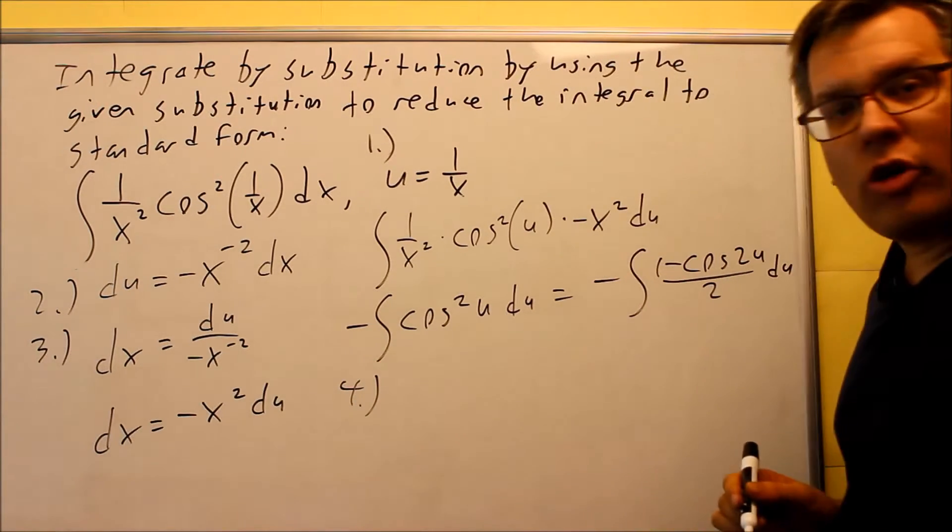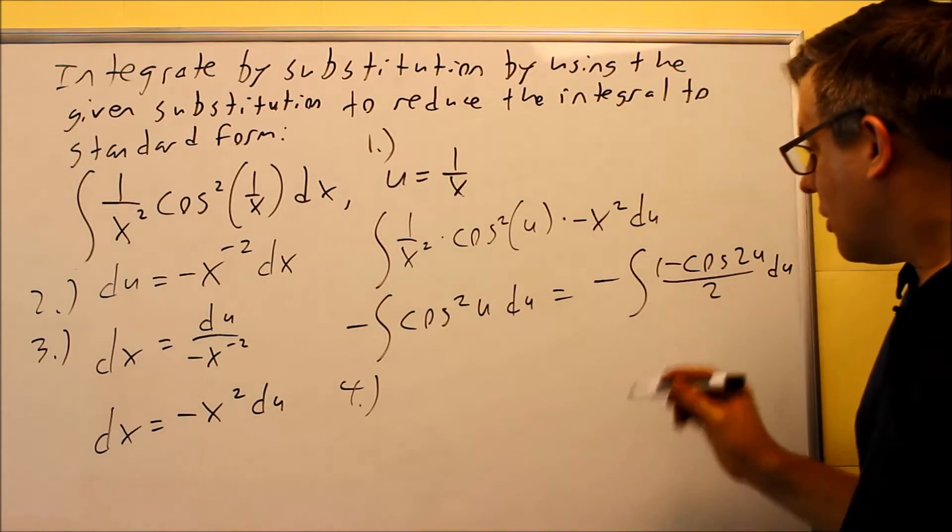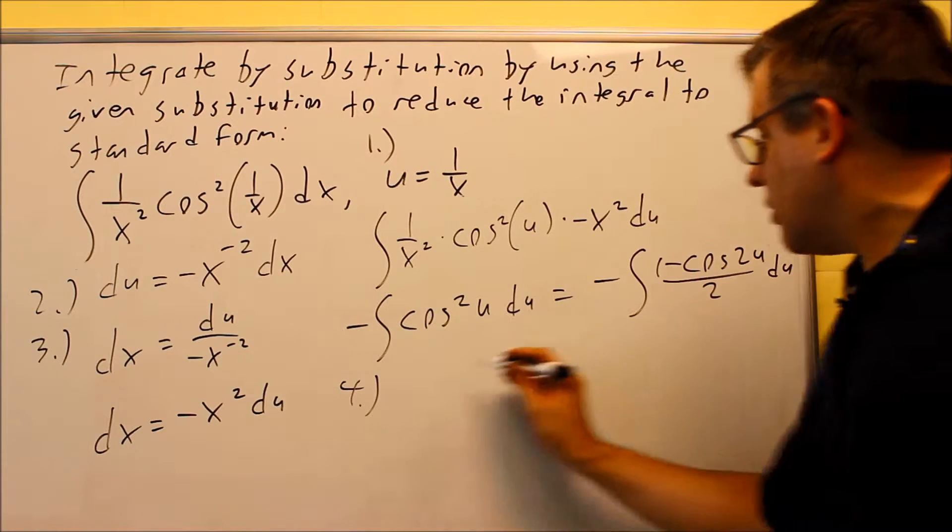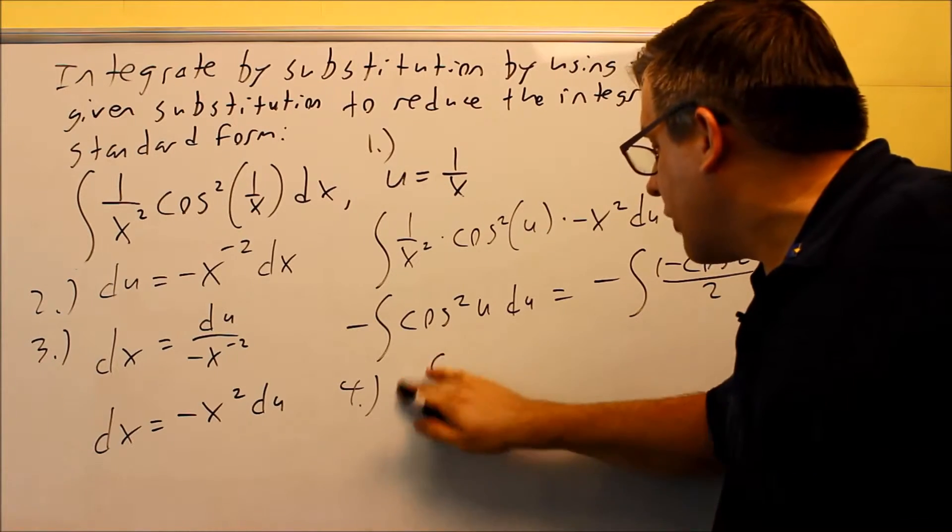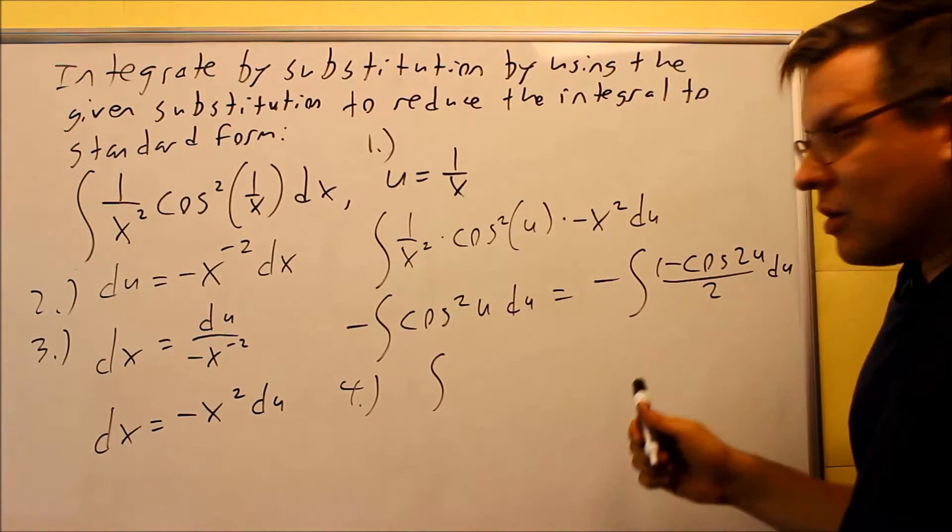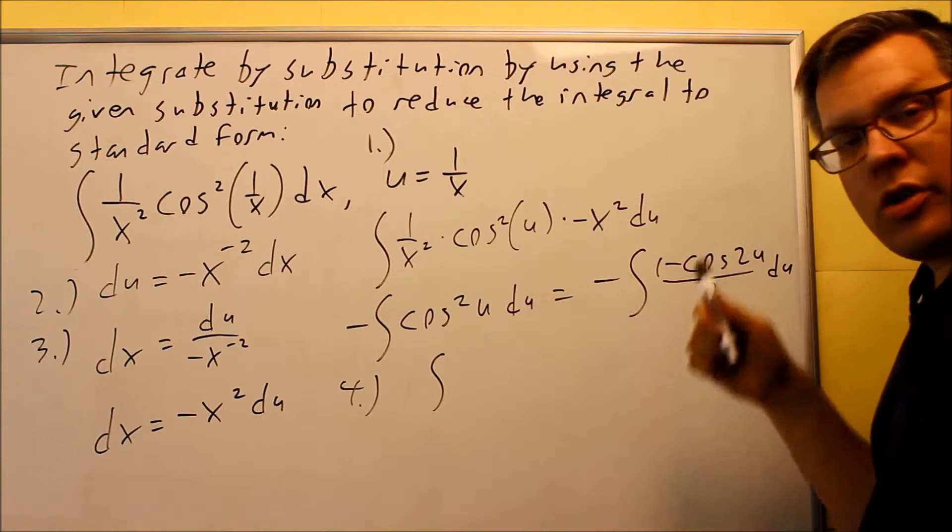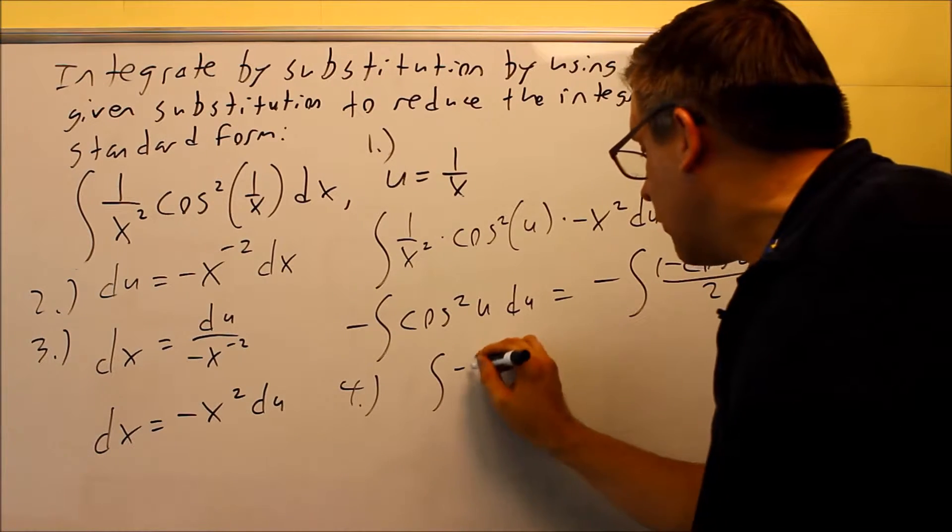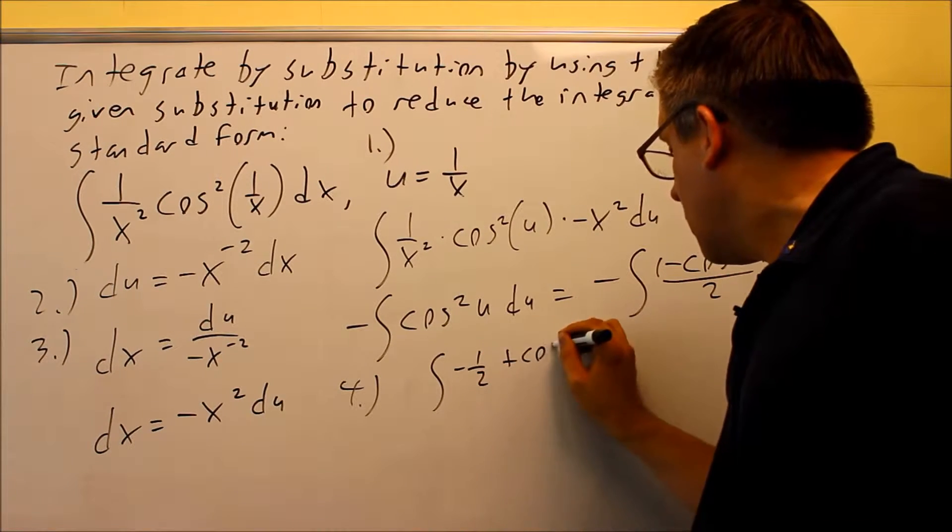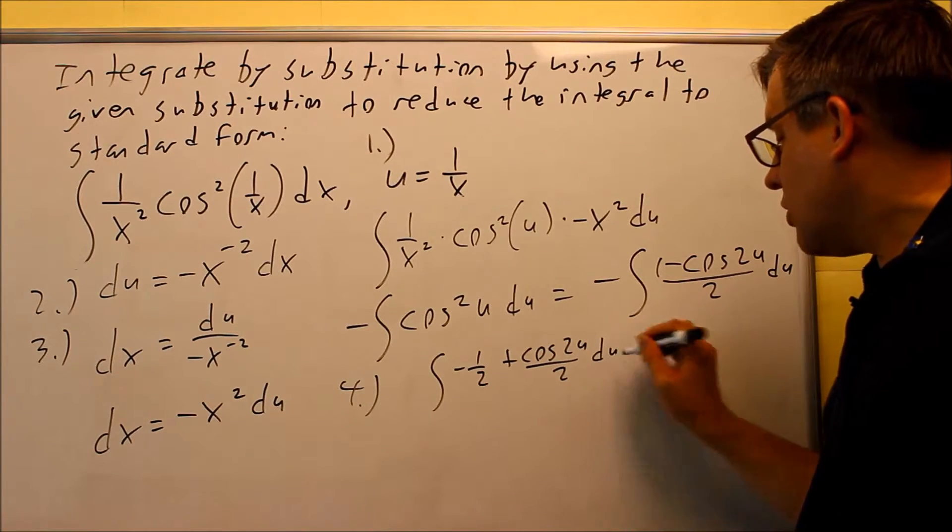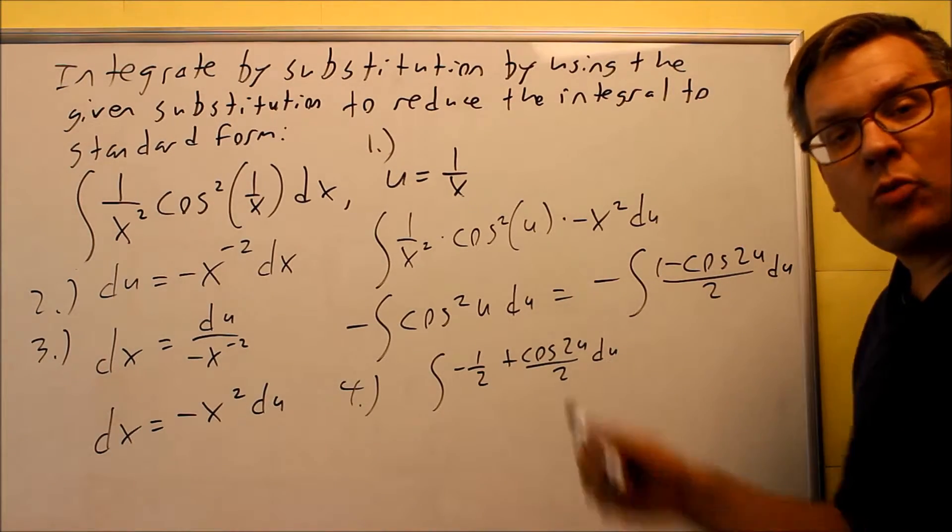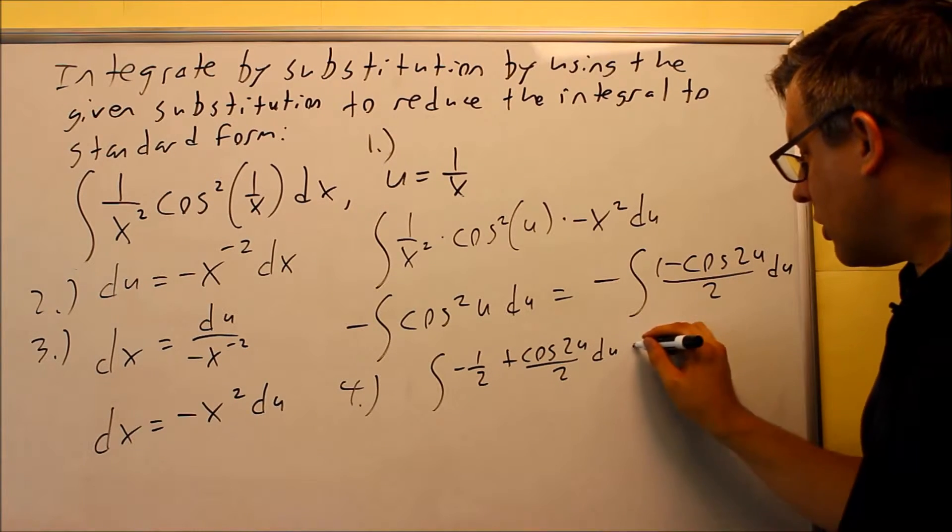So for this one, we can first do a step of, we're going to simplify it, and the negative I'm actually going to put on the inside. So when I put the negative on the inside, I'm also going to separate each of these, so I'm going to get negative 1 half and then plus cosine 2u over 2. So this gets it into the proper form, and I'm ready to integrate each one of those individually.